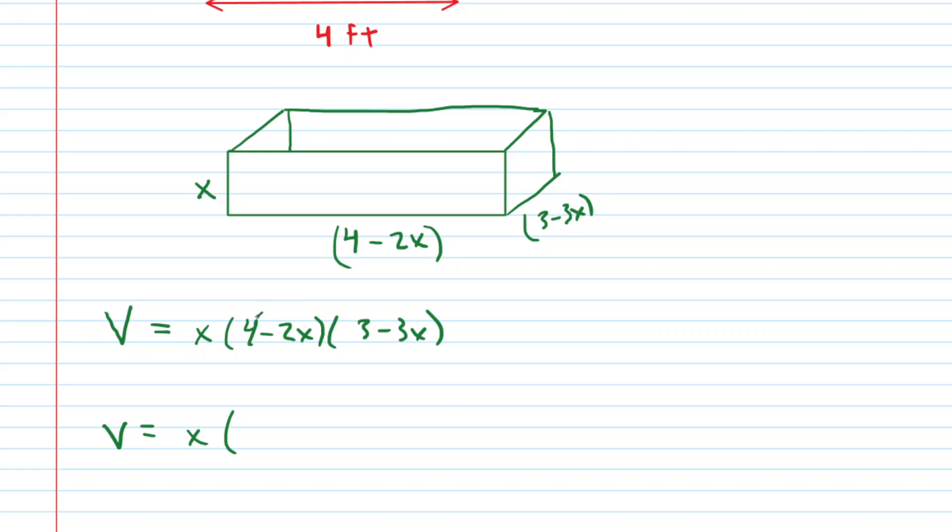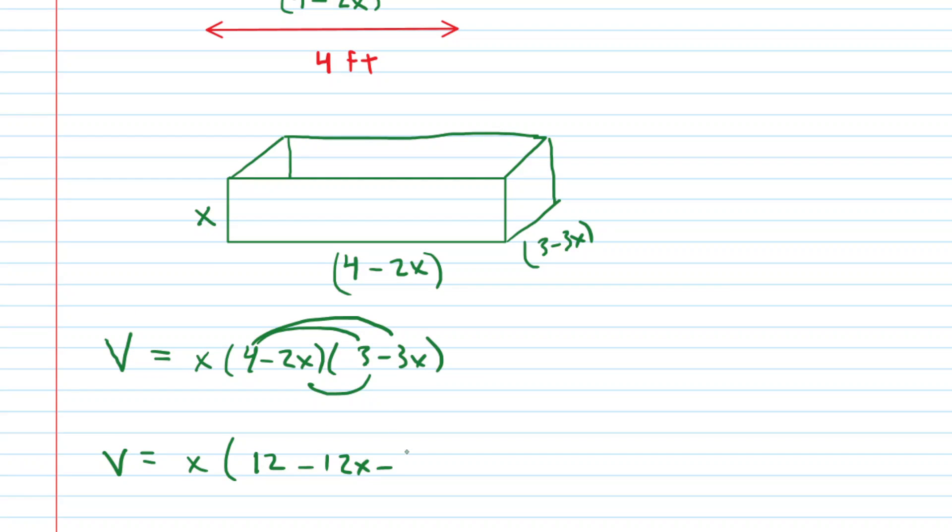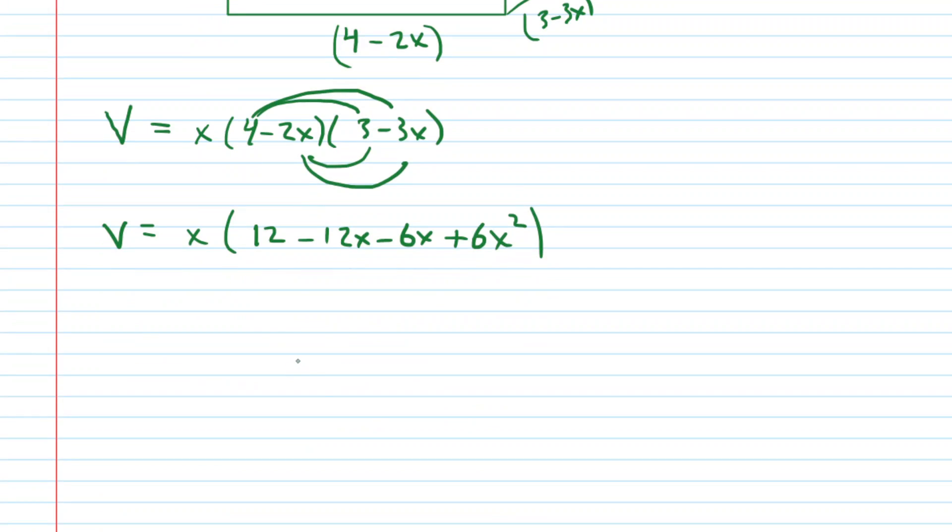And what you want to do here is foil the 4 minus 2x and the 3 minus 3x. So 4 times 3 is 12. This 4 times negative 3x is negative 12x. 3 times negative 2x is negative 6x, and then negative 2x times negative 3x is a positive 6x squared. We can combine some like terms in the middle there.